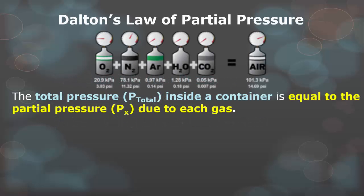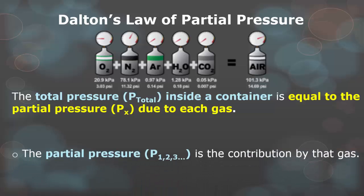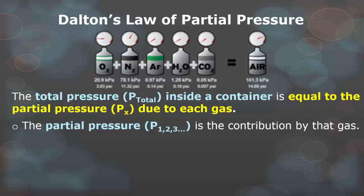The first thing that we're going to talk about is Dalton's law of partial pressure. As the diagram shows, if you have a bunch of different gases in a tank, you can determine the entire pressure of the tank based on the partial pressures of all the gases. The total pressure, otherwise called P total, inside of a container is equal to the partial pressure, otherwise known as Px, due to each gas. The partial pressures, which can be for gas 1, 2, and 3, is the contribution by that gas. Your total pressure of the entire container is the sum of all the partial pressures combined.